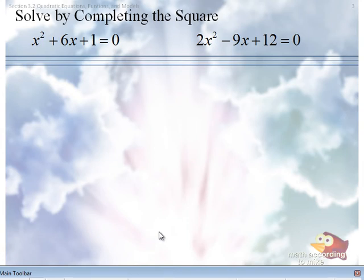Solve by completing the square. The first one, x squared plus 6x plus 1 equals 0. There are two steps that are necessary before you complete the square. What are those two steps?